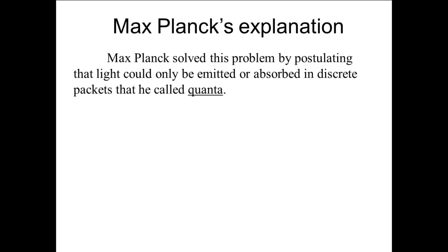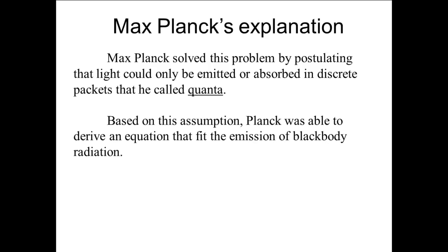In 1900, after several attempts to explain the spectrum of a black body, Max Planck proposed that light could only be emitted or absorbed in discrete packets that he called quanta. This is the quantum nature of light and means that light has a particle nature as well as a wave nature. Based on this assumption, Planck was able to derive an equation that fit the emission of black body radiation. Even Planck at first thought that this was only a theoretical construct, but later came to believe that it was a fundamental aspect of the nature of light. The quanta came to be called photons, and are the particles of light.